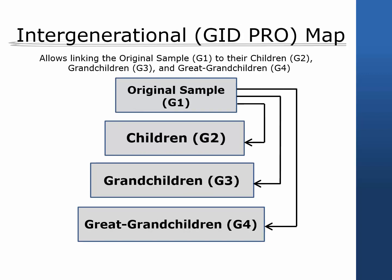Finally, in 2014, a prospective intergenerational map, GID Pro, was added to FIMS. Here, the starting generation G1 is the original sample from 1968. Descendants of original PSID households form subsequent generations, again up to three generations down, where G2 is the child, G3 is the grandchild, and G4 is the great-grandchild.